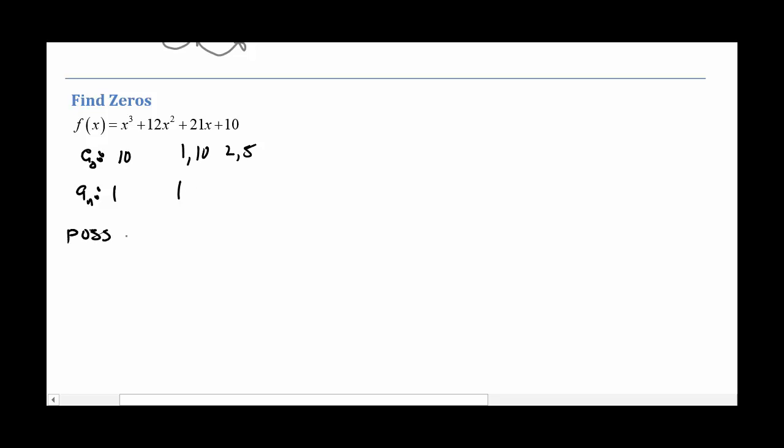Okay, so the possible roots are plus or minus, and I could have 1 over 1, 10 over 1, 2 over 1, or 5 over 1. Okay, so how many total possibilities do I have here? I got 4 positive and 4 negative. So I got 8 possibilities.